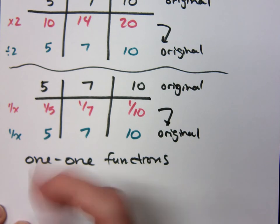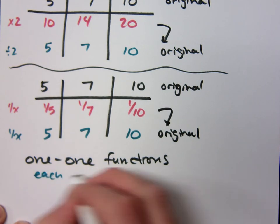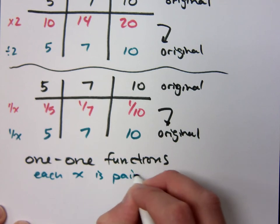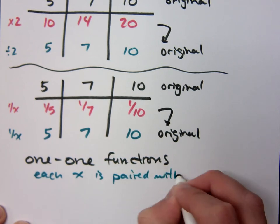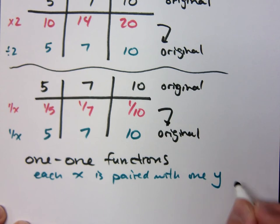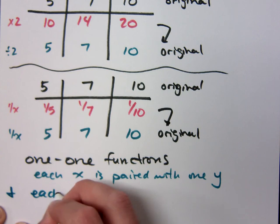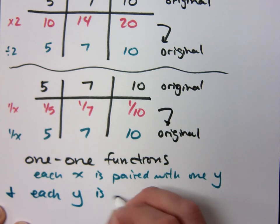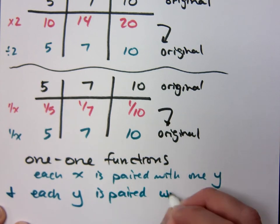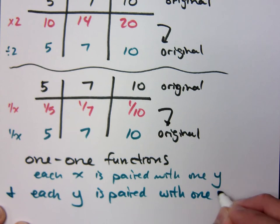Basically, what this says is that each x is paired with one y. Now, we said that to be a function, right? Each x is paired with only one y. But for it to be one-to-one, then each y is paired with one x. So you have both of these guys having to be true. Each x is paired with one y. And each y is paired with only one x.